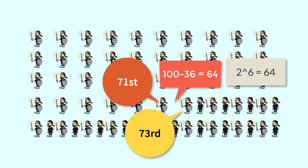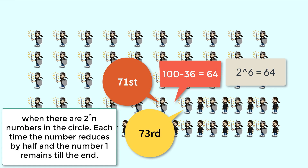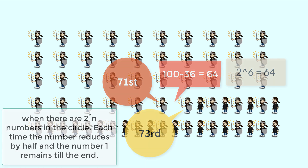We know from the prior example that when there are 2 to the power of n numbers in the circle, each time the number reduces by half and number one remains till the end. So the logic is: reduce the total number of people to the nearest power of 2. Here we reduce to 64, since 64 is 2 to the power of 6. The first person in this new circle of 64 will be the one who survives.